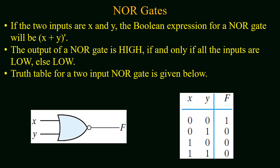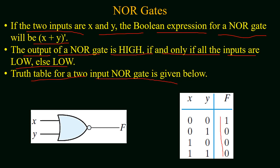If two inputs X and Y are applied to a NOR gate, the Boolean expression for the output will be (X + Y)'. The output of the NOR gate is high if and only if all the inputs are low; otherwise the output is low. This can be verified from the truth table of the two-input NOR gate.